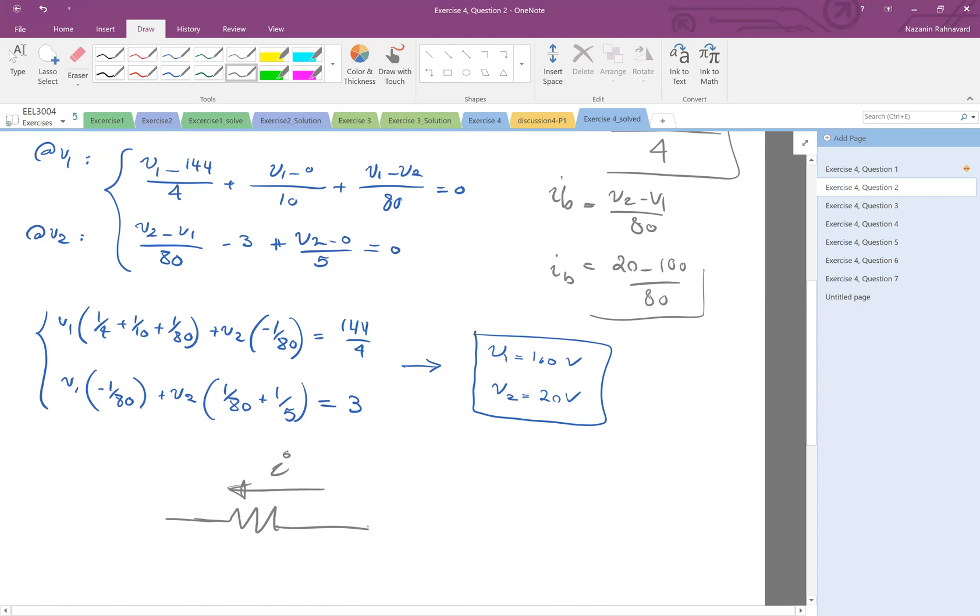You have to look at the voltage in the direction that the current is going this way. So this is Ia, this is Va, this is Vb, and this is R. So Ia would be Va minus Vb divided by R.